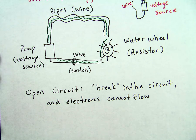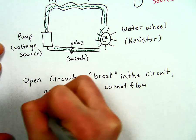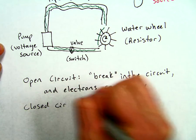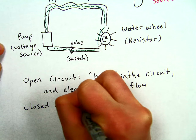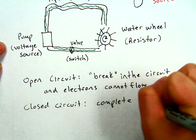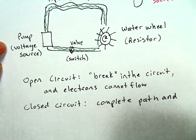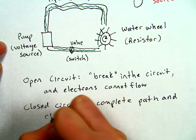The opposite is a closed circuit. A closed circuit is when everything is flowing normally. It's a complete path. It's a complete path and electrons flow normally.